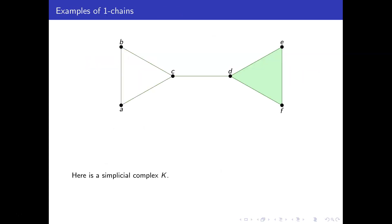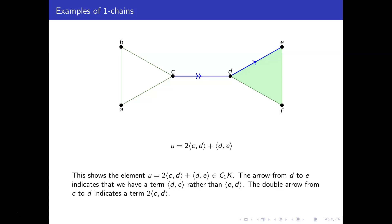So here's some examples. Here's a simplicial complex K. And we could consider twice pointy ⟨CD⟩ plus pointy ⟨DE⟩, that's a 1-chain. And it's kind of drawn like this, we've got a double headed arrow from C to D, that's for twice C comma D, and a single arrow from D to E, that's for D comma E.